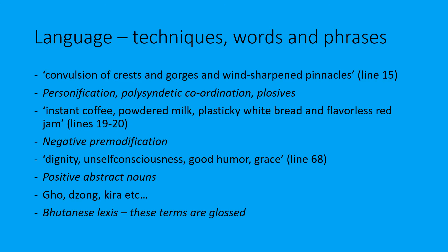On lines 68 and 69, she's talking about the Bhutanese people and tries to sum them up. She finds it difficult - she says she can find no single word to hold all of her impressions. But she tries and talks about their dignity, self-consciousness, good humour, and grace. These are all abstract nouns referring to concepts, ideas, qualities. You could say the writer uses positive abstract nouns - dignity, self-consciousness, good humour, grace - in an attempt to explain the character of the Bhutanese people. The phrase 'can find no single word' emphasises how much she seems to admire them, almost in awe of something she can't quite pin down.